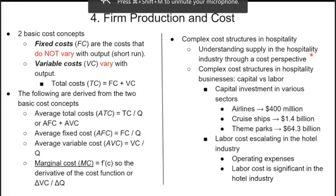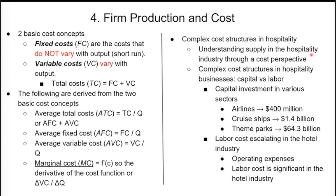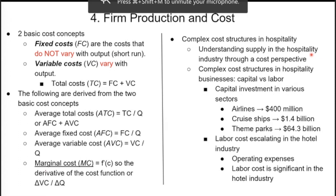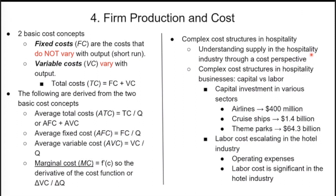The average total cost is total cost divided by Q, or alternatively average fixed cost plus average variable cost. These formulas should be very familiar. Marginal cost is the derivative of the cost function or the change in variable cost over the change in quantity. It doesn't concern fixed cost because when you take the derivative, the fixed cost appears as a constant, and constants are not taken into consideration.